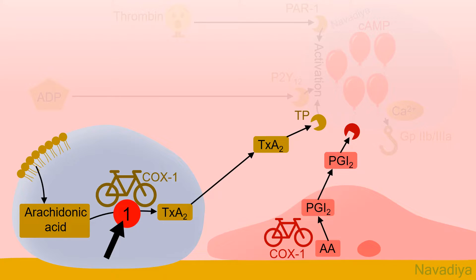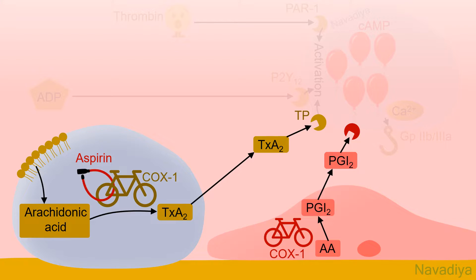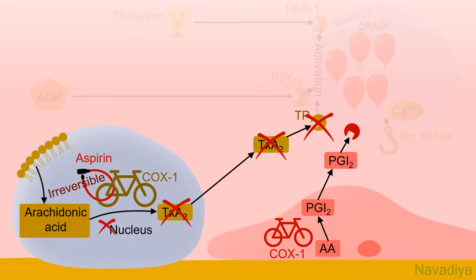First, thromboxane A2 synthesis inhibitors. Here we have aspirin. It inhibits cyclooxygenase 1, so thromboxane A2 is not produced. Without thromboxane A2, more platelets cannot be activated. This inhibition is irreversible, so once the enzyme is inhibited, it is inhibited forever. Moreover, platelets do not have a nucleus, so new enzymes cannot be produced. The result is that inhibition by aspirin lasts throughout the life of the platelet, and repeat doses of aspirin produce a cumulative effect.